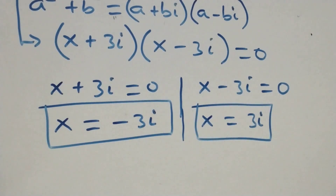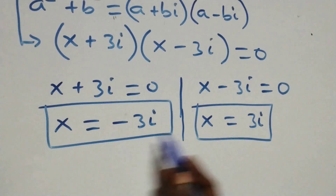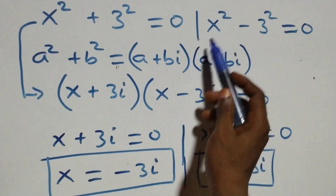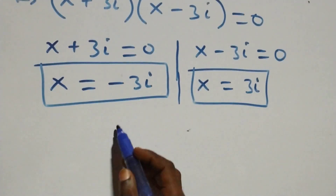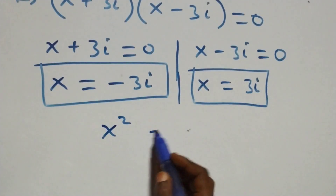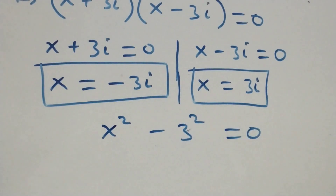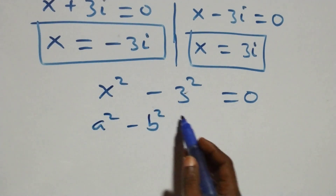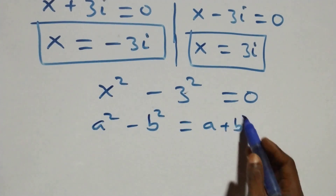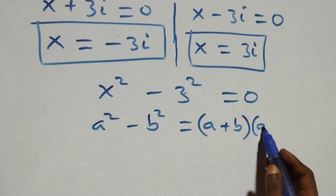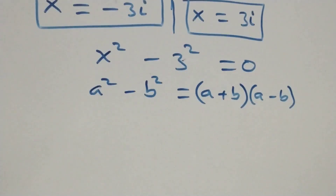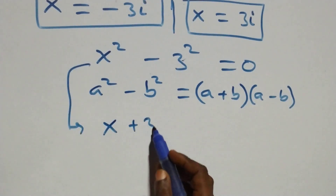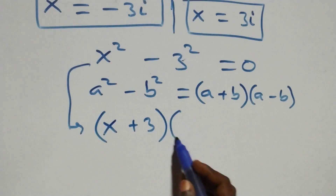We have two complex solutions. Now solving the second case, x squared minus three squared equals zero. We apply the difference of two squares: a squared minus b squared equals (a + b)(a - b). This becomes (x + 3)(x - 3) equals zero.